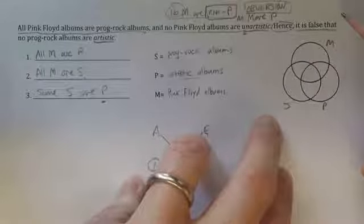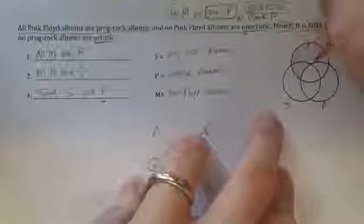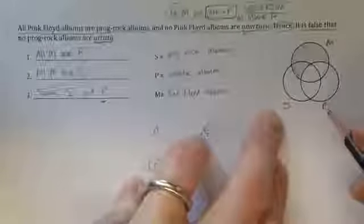Now, we have to diagram it. We have two universal premises, so it doesn't matter which one we start with. I'll diagram all M R P. We always diagram crescent moon shapes or football shapes when we're shading.